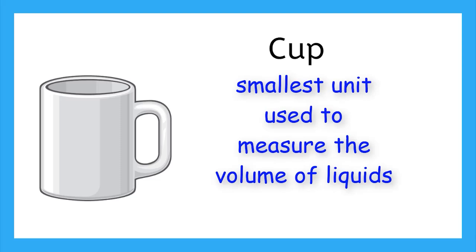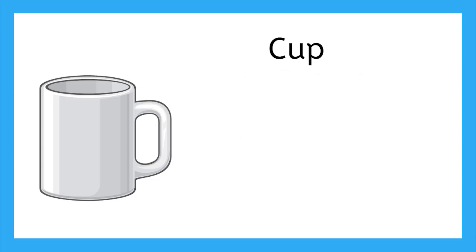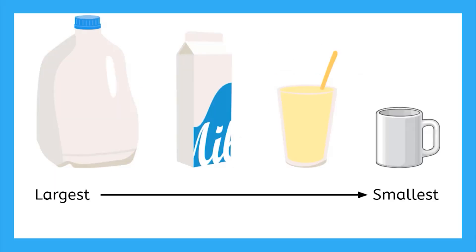Now how do these units all compare to each other? Here we have them ordered from largest volume to the smallest volume. Now let's look at how these units compare to each other numerically, or with values.